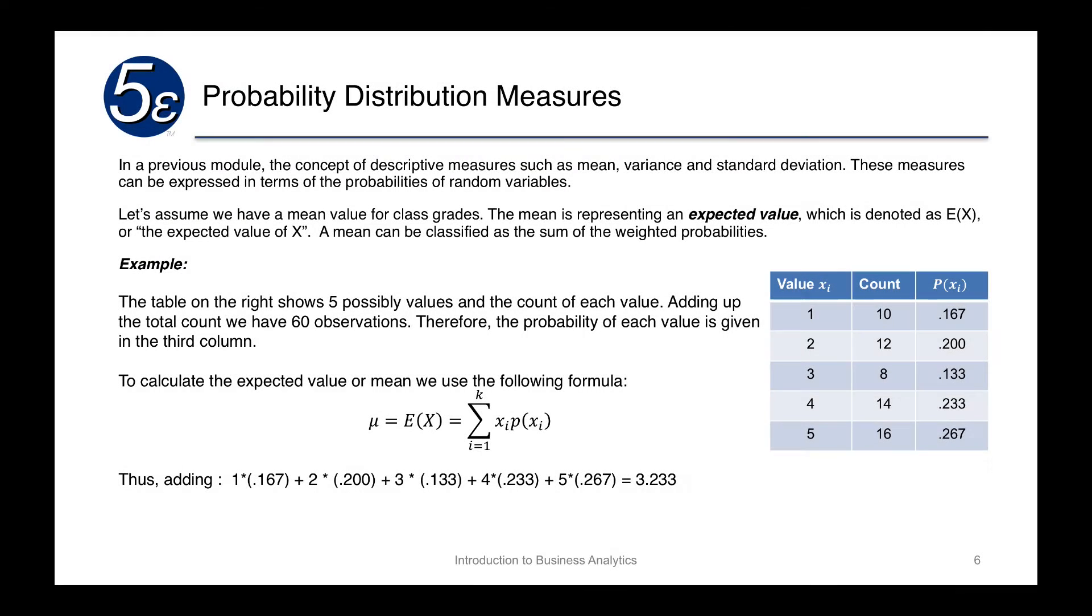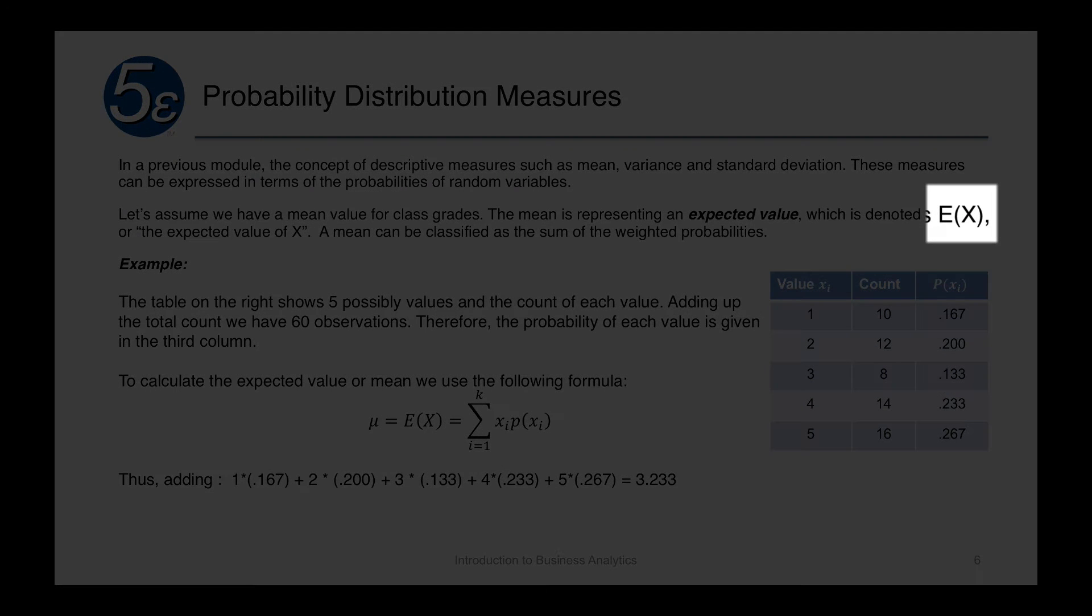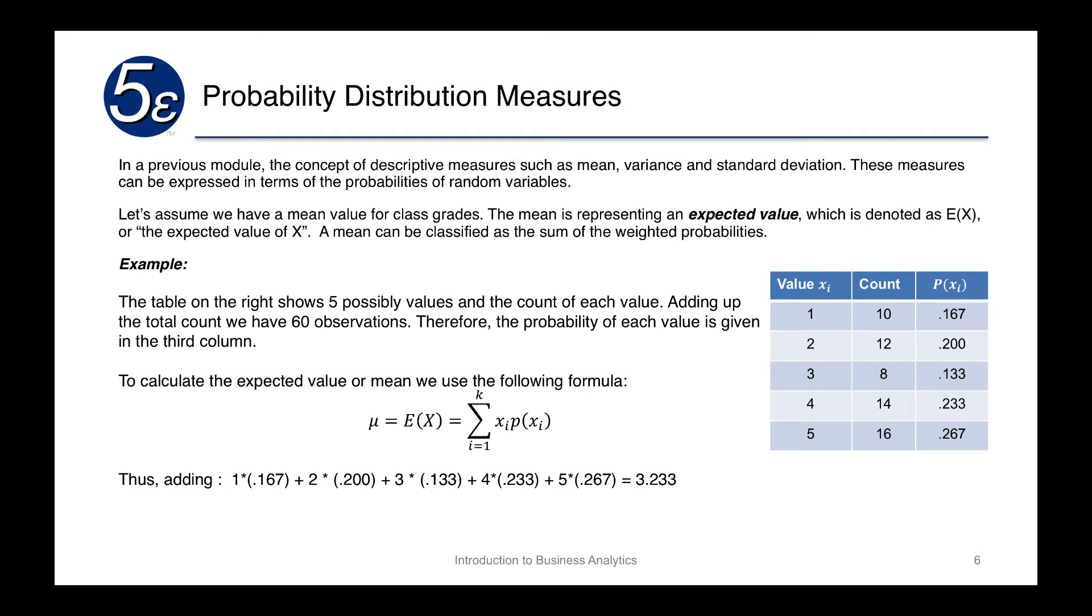In a previous module, the concept of descriptive measures such as mean, variance, and standard deviation were shown. These measures can be expressed in terms of the probabilities of random variables. A mean is really an expected value, which we denote as E(x), the expected value of x. It's classified as the sum of weighted probabilities, especially in a discrete sense, which is what we're looking at here.